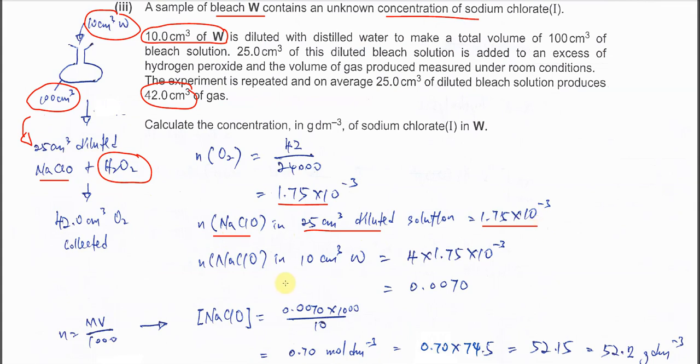How about the number of moles of sodium chlorate in the 10 cm³ that was being diluted? Because the 25 cm³ is from 100 cm³, the number of moles of 100 cm³ must be 4 times larger than the one that reacted. So here you have to times 4. After times 4, it's equivalent to the 100 cm³, so we will know the amount of W in the 10 cm³.